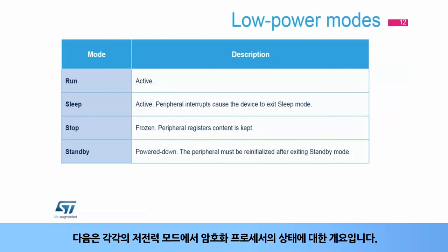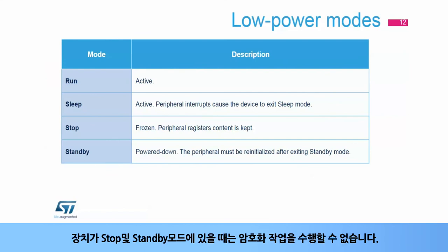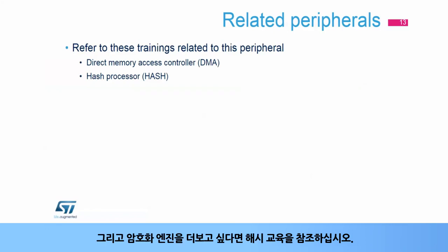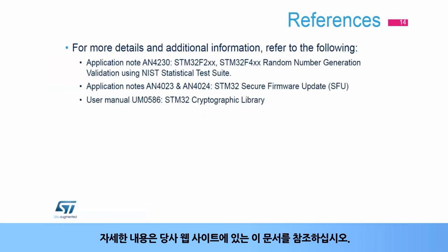Here is an overview of the status of the cryptographic processor in each of the low power modes. Cryptographic operations are not possible when the device is in stop and standby modes. This is a list of peripherals related to the cryptographic processor. Refer to the DMA training for more information about the cryptographic channel configuration, and please refer to the hash trainings if you want to go further on cryptographic engines. For more details, please refer to these documents available on our website. Thank you.